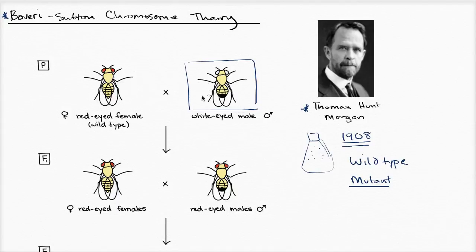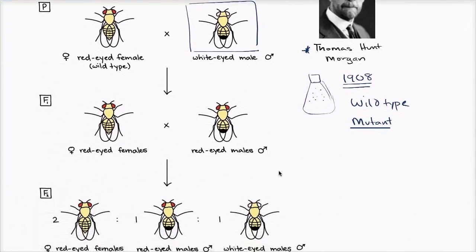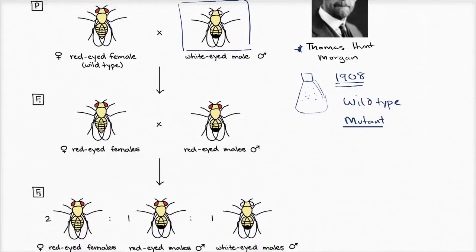What was interesting was the inheritance pattern that he saw for this white-eyed trait. Because you have the parent generation here, but then in the F1 generation, all of the females were red-eyed and all of the males were red-eyed.